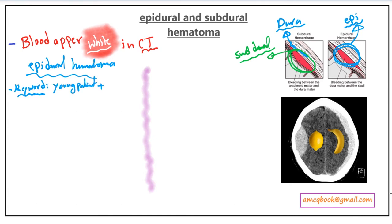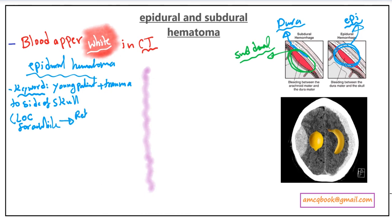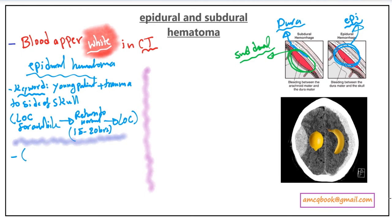The keyword scenario for epidural hematoma is a young patient with a history of trauma to the side of the skull, leading to loss of consciousness, then returning consciousness for about 15 to 20 hours, after which he loses consciousness again. Keep this scenario in mind. The cause is rupture of the middle meningeal artery.